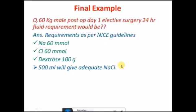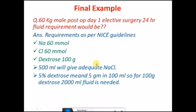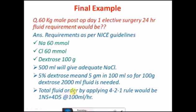One bottle of 500 ml NaCl contains 77 milliequivalents of sodium or millimoles and 77 of chloride. For 500 ml it is 77, so it will give 60 millimoles. 5% dextrose means 5 grams in 100 ml, so for 100 grams dextrose, 2000 ml fluid is needed. So the order would be: total fluid order by applying 4-2-1 rule—we need 2400 ml. So one normal saline plus four D5 at the rate of 100 ml per hour should be the answer.